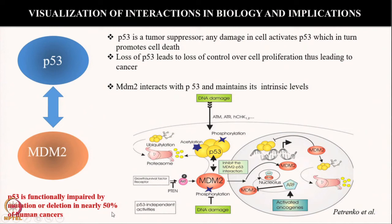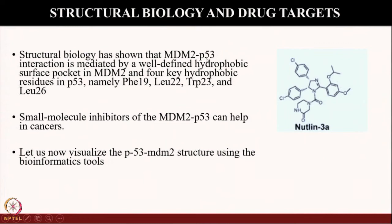In abnormal cases, MDM2 and P53 control gets disrupted and the cells often become cancerous. P53 is also functionally impaired in nearly 50% of human cancers. Structural biology has shown that MDM2 to P53 is interacting via a hydrophobic surface pocket using specific amino acid residues. Also, structural elucidation of this interaction led to the discovery of small molecules like NUTLIN3A which can help in cancer. So now let's see this interaction using the bioinformatic tools.